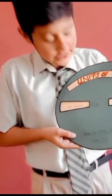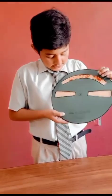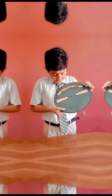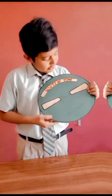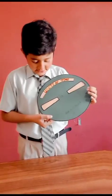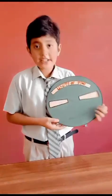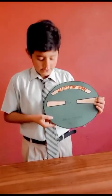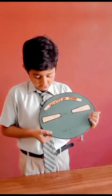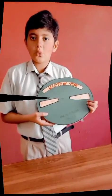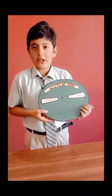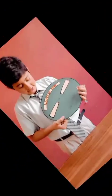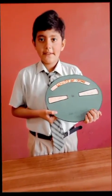Units of Time: 60 seconds is equal to 1 minute, 60 minutes is equal to 1 hour, 24 hours is equal to 1 day, 7 days is equal to 1 week, 28 to 31 days is equal to 1 month, 12 months is equal to 1 year, 10 years is equal to 1 decade.